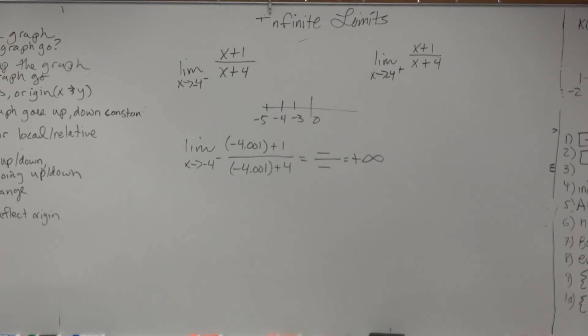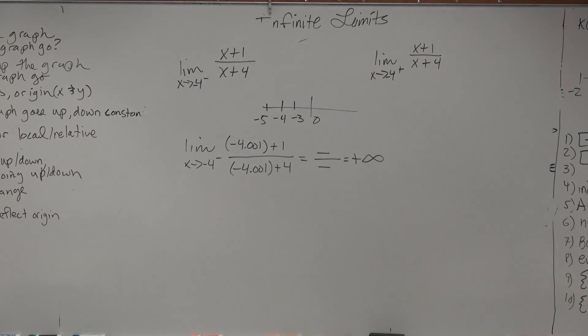Because we know there's an asymptote there. We know there's an asymptote at 4. So we know it's not approaching a number.